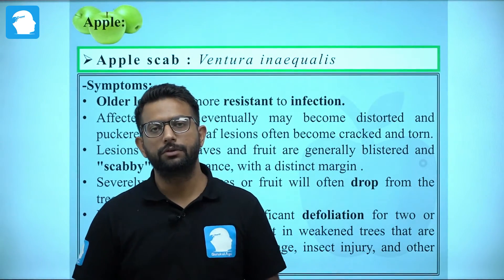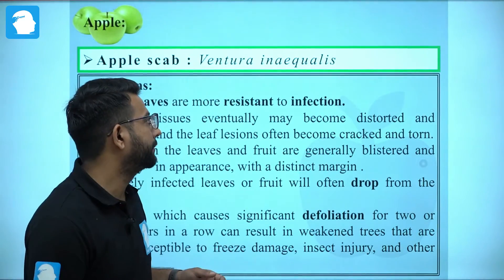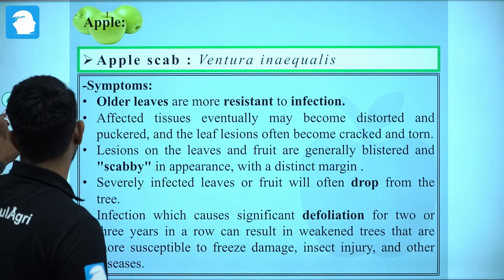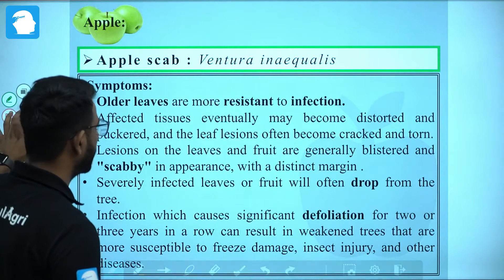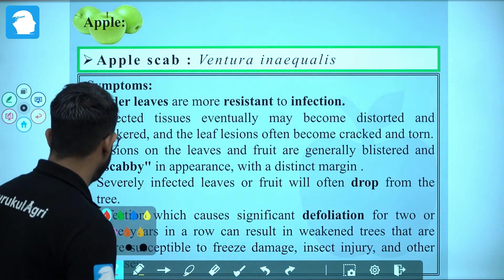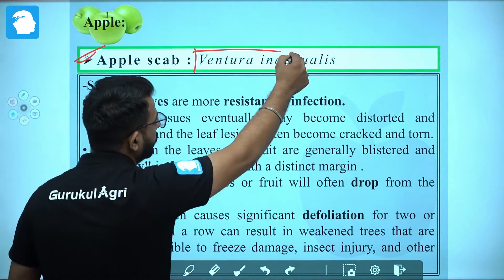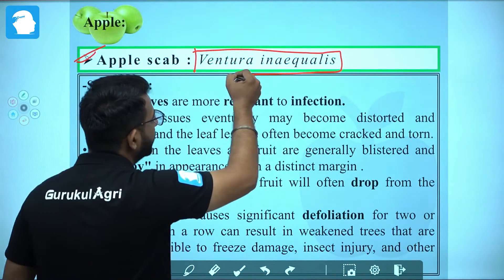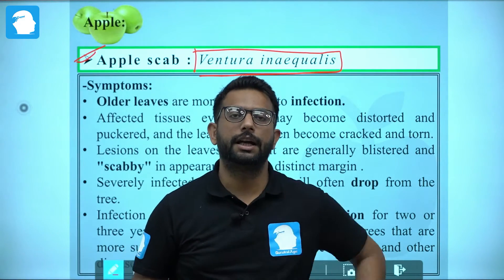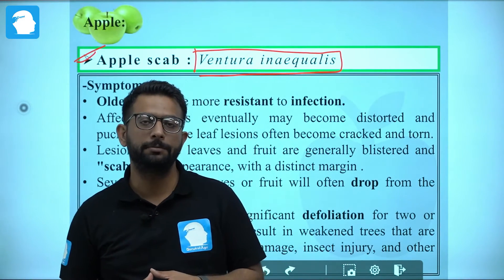Today we will discuss the disease of apple, that is apple scab. Apple scab is caused by a fungus, Venturia inaequalis. The causal organism is important — Venturia inaequalis — and from the name we get the idea that it is apple scab.